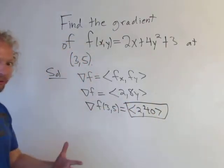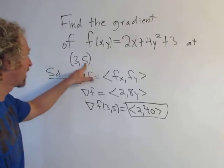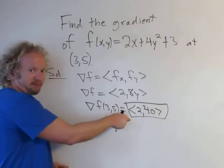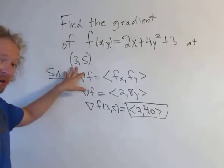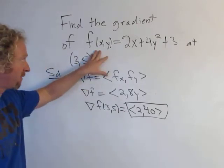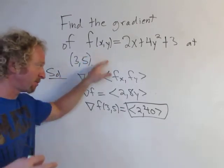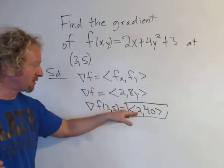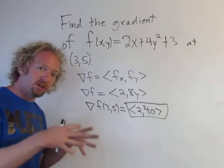So what does this mean, like intuitively? So at the point 3 comma 5, this function f increases most rapidly in the direction of this vector. Again, at the point 3 comma 5, the function f increases as fast as possible in the direction of this vector. So if f travels in the direction of this vector at 3 comma 5, it will increase most rapidly.